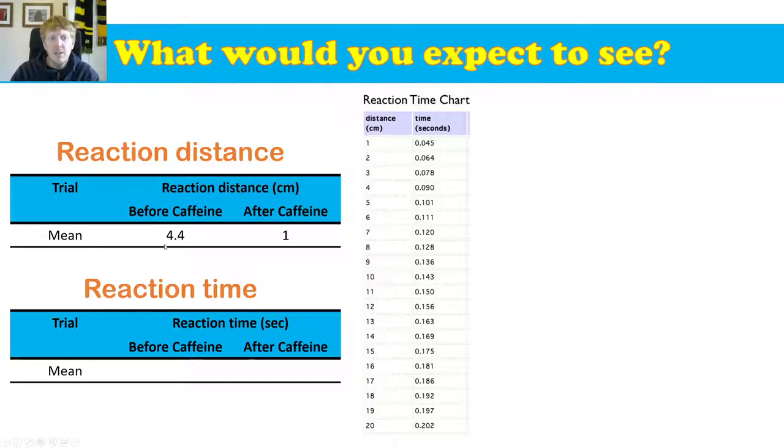So I'll step you through it right here. So before caffeine, reaction distance was 4.4 centimeters. Go over to the chart. 4 means it's 0.09 of a second. Put that into our reaction time table down here. Jobs are done. All right. So now one, one centimeter, 0.045. Chuck it in our table just there. Bob's your uncle.